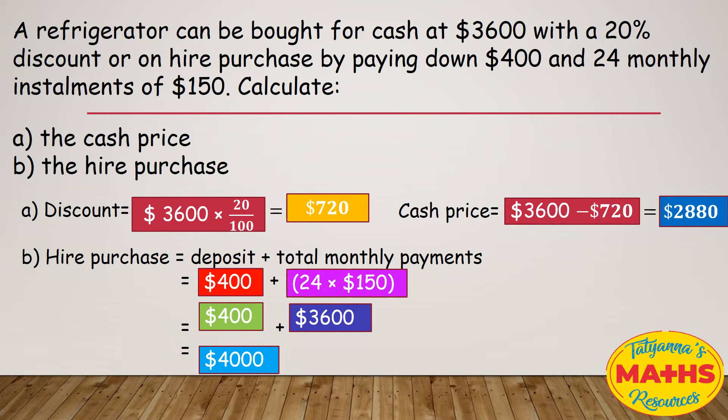So remember, we said the hire purchase is always more than the original cost of the item. Because she pays on hire purchase, she's gonna pay $4,000.